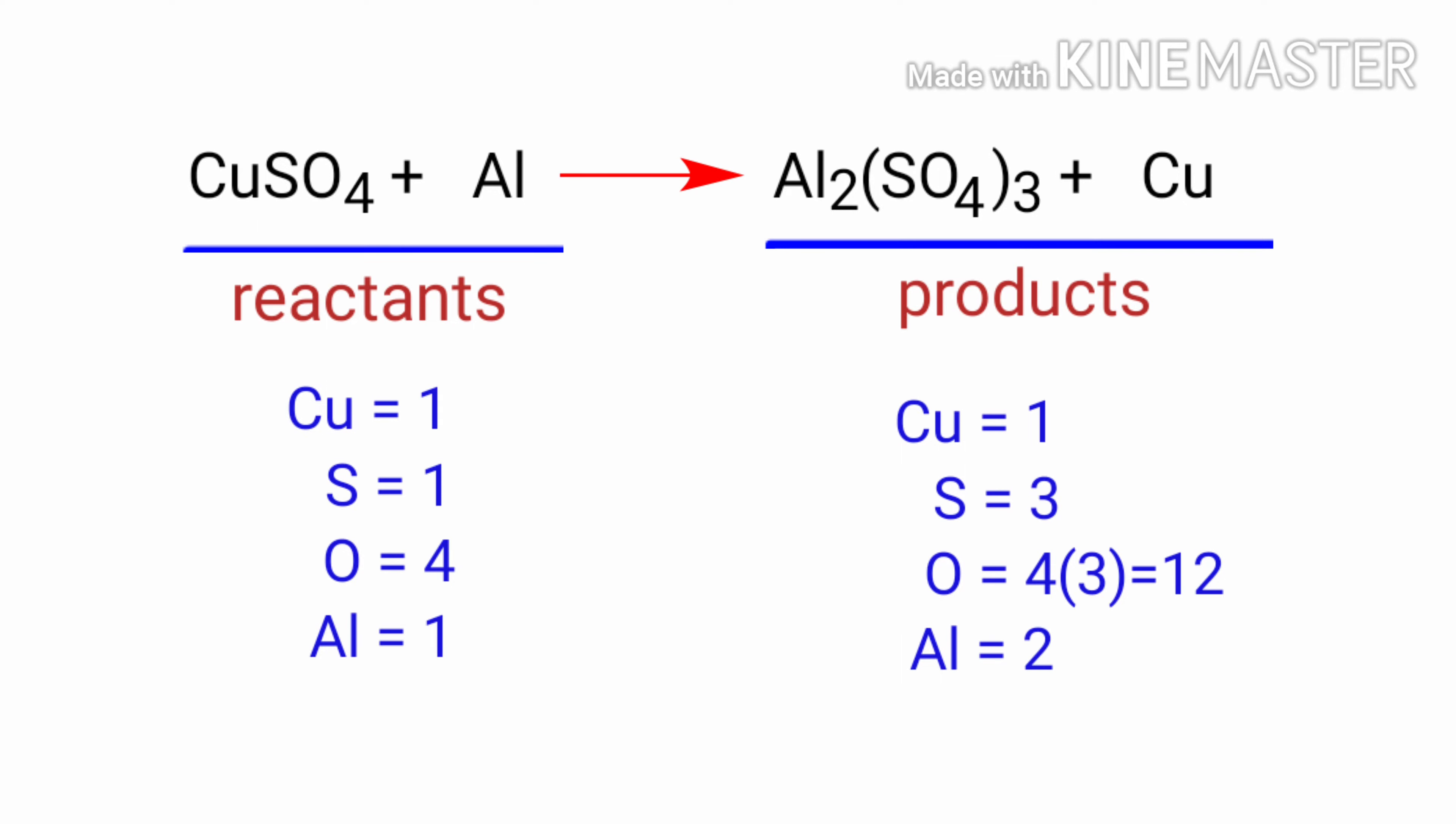In the reactants side, there are 1 copper atom, 1 sulfur atom, 4 oxygen atoms, and 1 aluminium atom present. And the products side, there are 1 copper atom, 3 sulfur atoms, 12 oxygen atoms, and 2 aluminium atoms present.